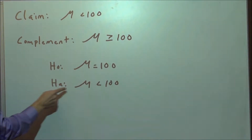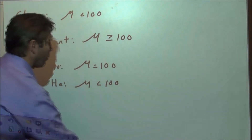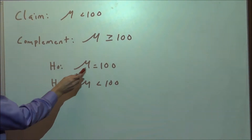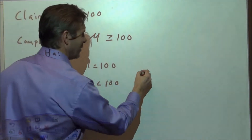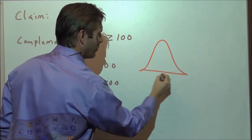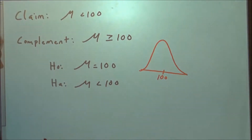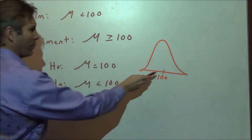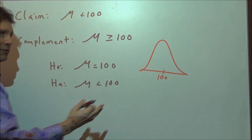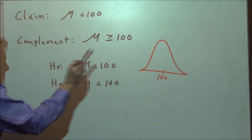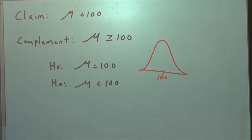The alternative is the one that doesn't have equality. The reason we want the null to be the statement with equality is so that we can assume the null is true and go to a sampling distribution where we assume 100 is the true mean. That allows us to get probabilities — it gives us a reference distribution to work from.